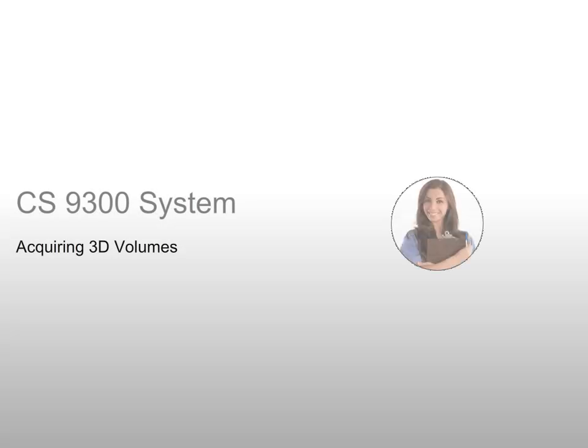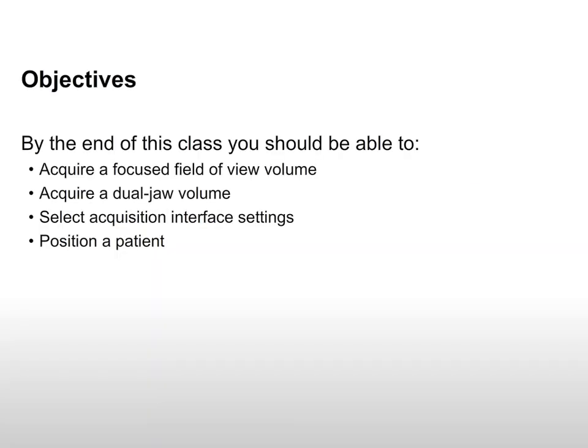This beginning level recorded class is designed for clinical team members and demonstrates how to acquire a 3D volume x-ray using the CS9300 system. By the end of this class, you should be able to acquire a focused field of view volume, acquire a dual jaw volume, select acquisition interface settings, and position a patient.